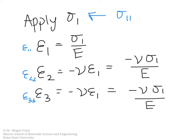Now if we also had sigma two or sigma three present, then we would repeat that same approach for each of those. So let's just assume that we have sigma two and make sure that we understand how to write those equations.